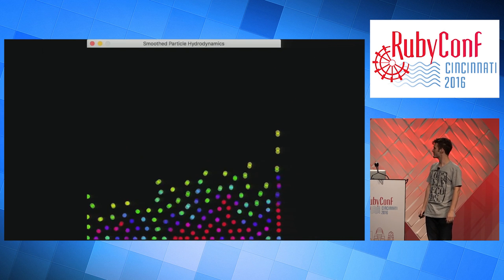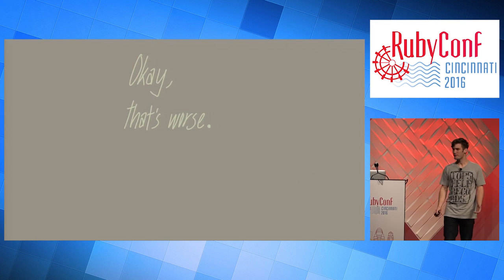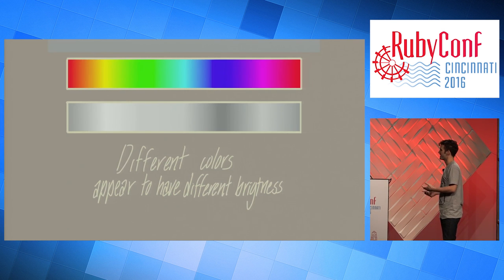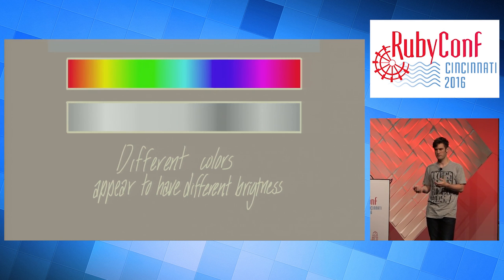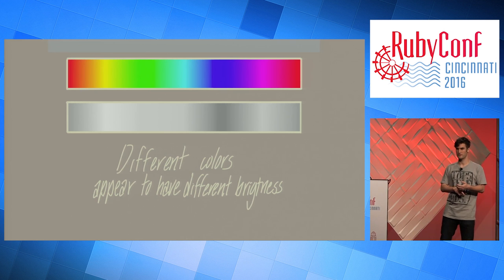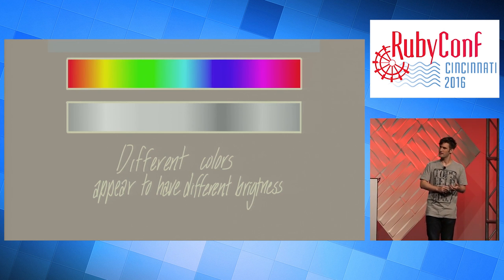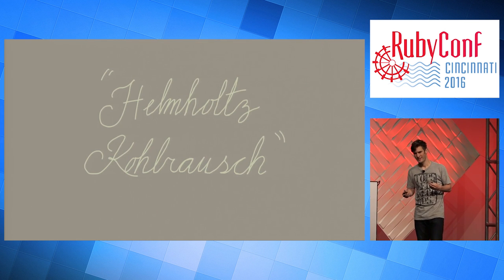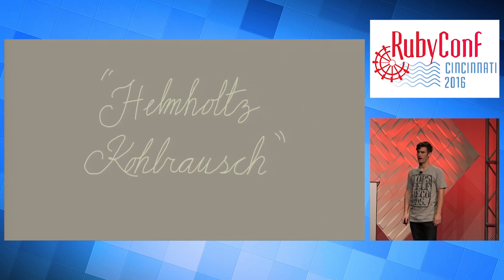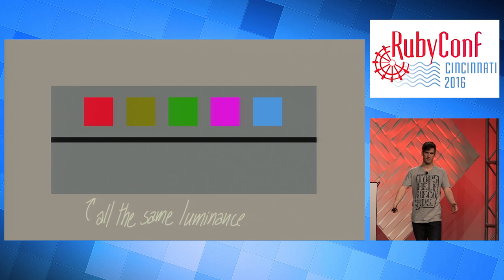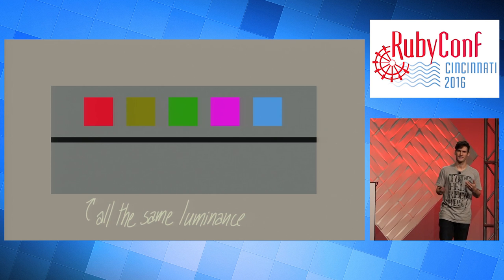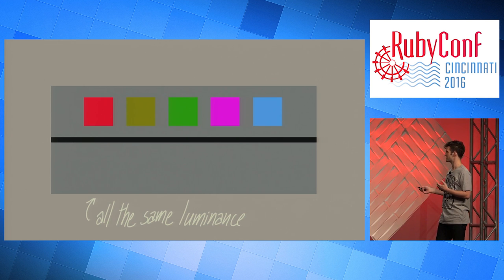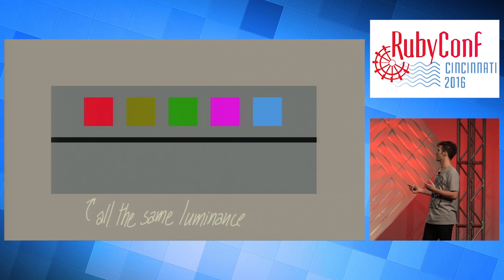But why is that worse? It doesn't give us more information, because different colors, even though they're fully saturated, even though I'm showing you the same amount of light for each, they appear to have different brightness. This is, first of all, super weird. Second of all, not entirely explained. There's a name for the thing itself — it's called the Helmholtz-Kohlrausch effect. There are various theories for why this happens, but the best we know is that these colors are all the same intensity, all the same luminance in theory, and they look really different. In fact, they're even supposed to be the same intensity as that gray background, which just doesn't look like that to me at all.